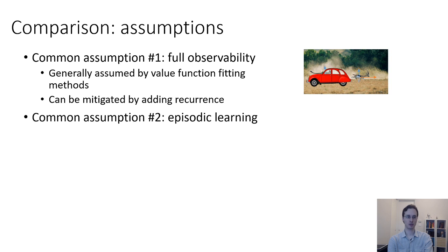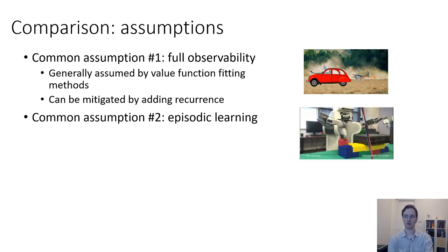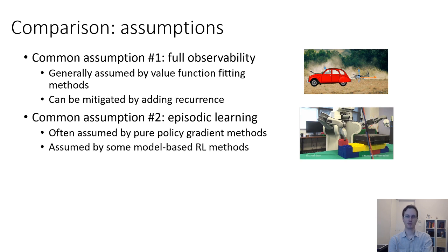Another common assumption, this one is common with policy gradient methods, is episodic learning. So here's a robot performing episodic learning. You can see that it makes a trial, then resets, and then makes another trial. So this ability to reset and try again repeatedly is often assumed by pure policy gradient methods, and although it's not technically assumed by most value-based methods, they tend to work best when this assumption is satisfied. It's also assumed by some model-based RL algorithms.